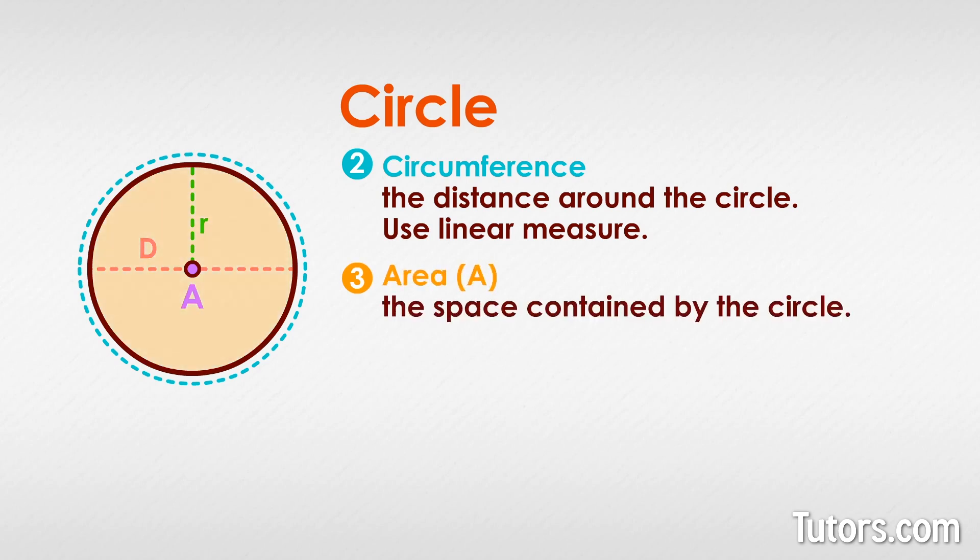A third major component of a circle is its area, or the space contained by the circle. This is always measured in square units based on the linear units used for the circle's circumference, diameter, and radius. The formula for the area of a circle is built around its radius: A equals pi r squared.